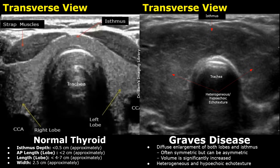Here is another case of Graves' disease. The thyroid appears enlarged, heterogeneous, and hypoechoic. The enlargement is asymmetric in this case — the enlargement in the right lobe seems more significant than the left.